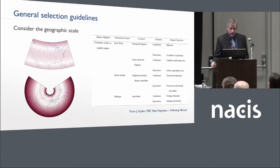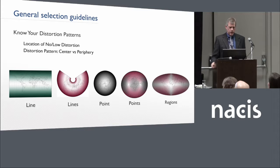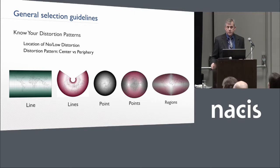Another projection selection guideline, widely cited by John Snyder, talks about geographic scale and the importance of that in the selection process. He does provide a bit more guidance in terms of a hierarchical structure. Know your distortion patterns — different distortions have different patterns, and the distortion impacts not only the shapes and configuration of the landmass, but it can also alter the symbolization methods that are used in the map.